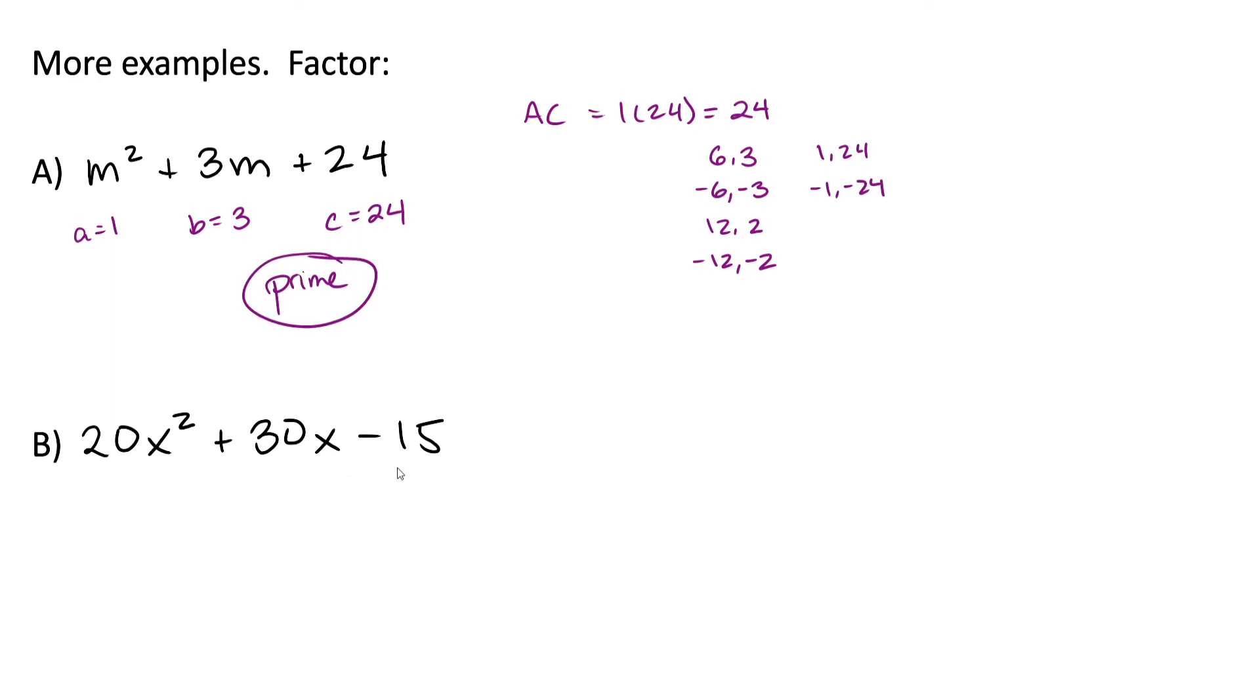Now we'll take a look at this example. Here we can factor out a GCF before we do anything else. They all have a factor of 5 in common. If we try to do AC method over here, we end up with 4 times negative 3 equal to negative 12. Now we would want to find factors of negative 12 that add up to positive 6. And none of these factors, we've gone through all of them, add up to positive 6. So this polynomial would be prime.